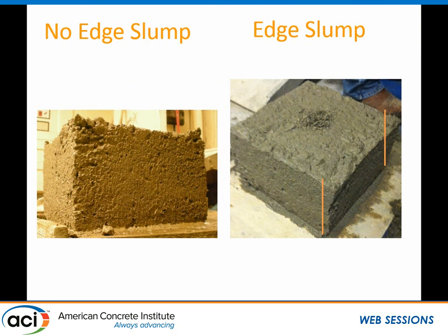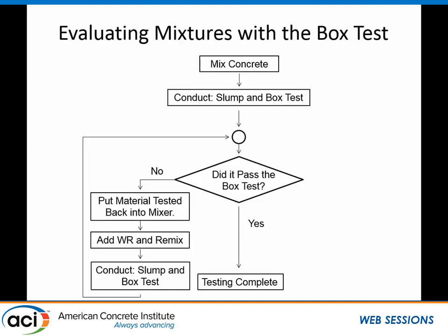We have no edge slumping on the left, edge slumping on the right — you can see it with your own eyes. Remember why we do this: because we want a window of workability. It needs to respond to the vibration, but not be so workable that it edge slumps and falls down.